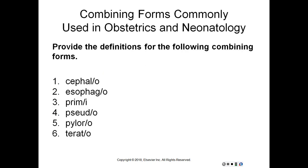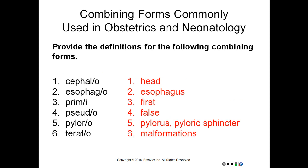They're just asking for the definitions of each of the combining forms we are going over right now. The first one is cephalo meaning head. Esophago meaning esophagus. Premi means first. Pseudo means false. Pyloro means pylorus or pyloric sphincter. Terato means malformations.